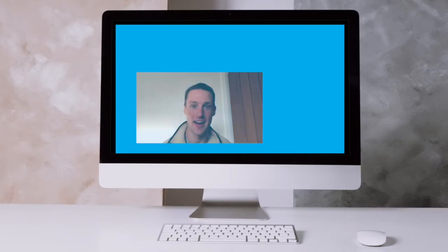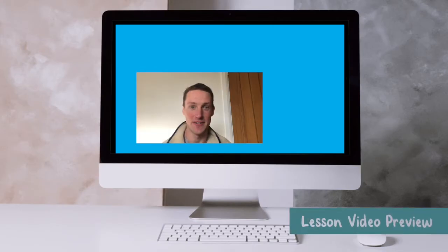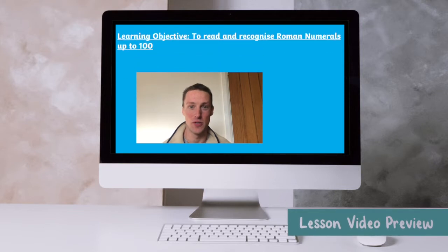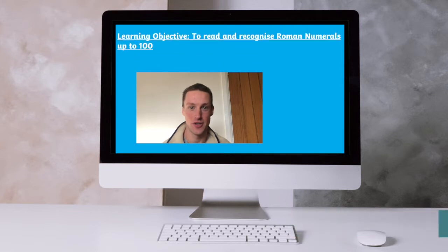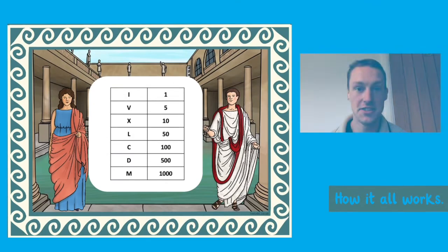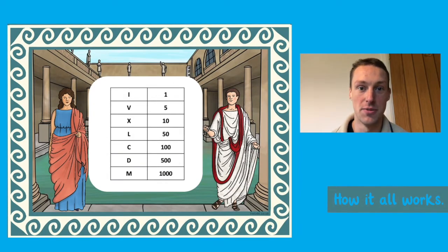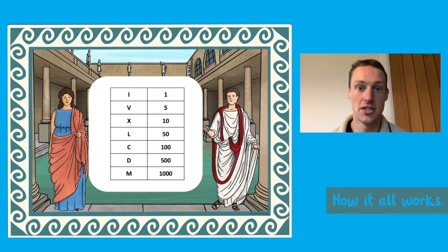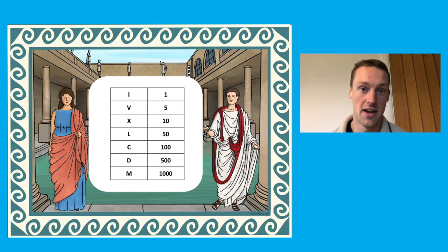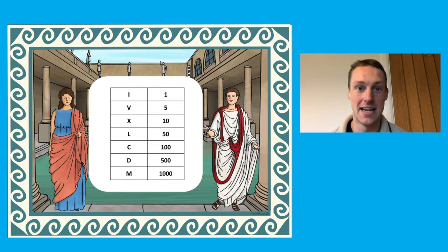Our learning objective for today is how to read and recognise Roman numerals up to 100. As you can see they look a little bit different from the numbers we're used to seeing today. Instead of using the digits 0 to 9, the Romans used seven different symbols to indicate numbers.